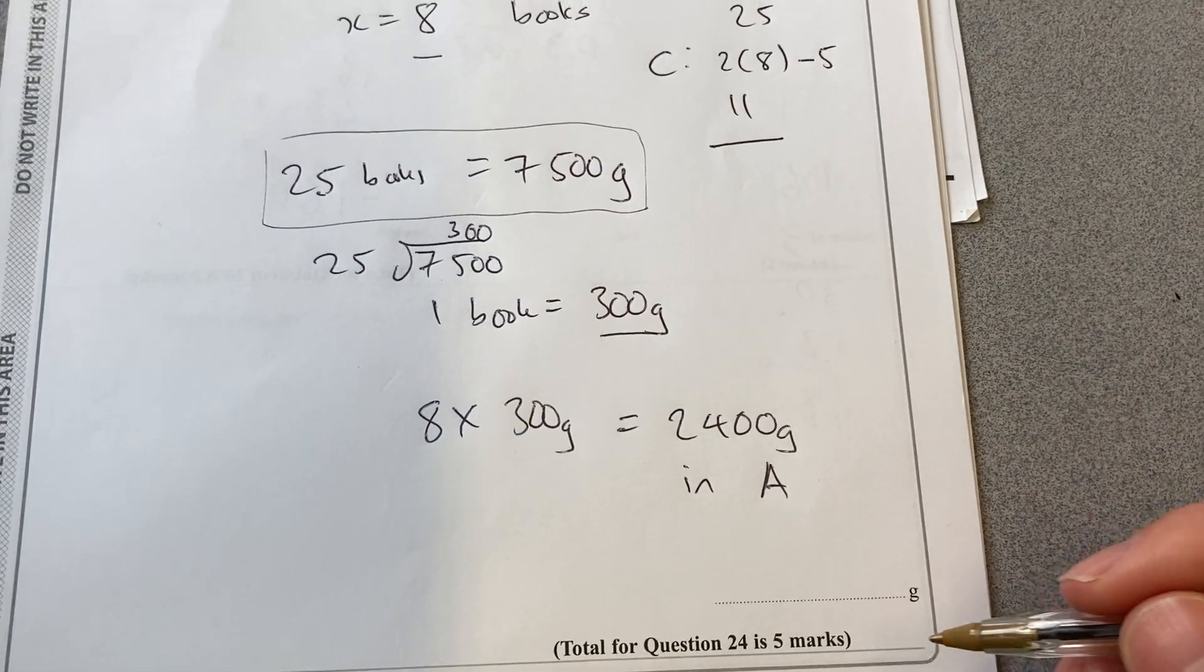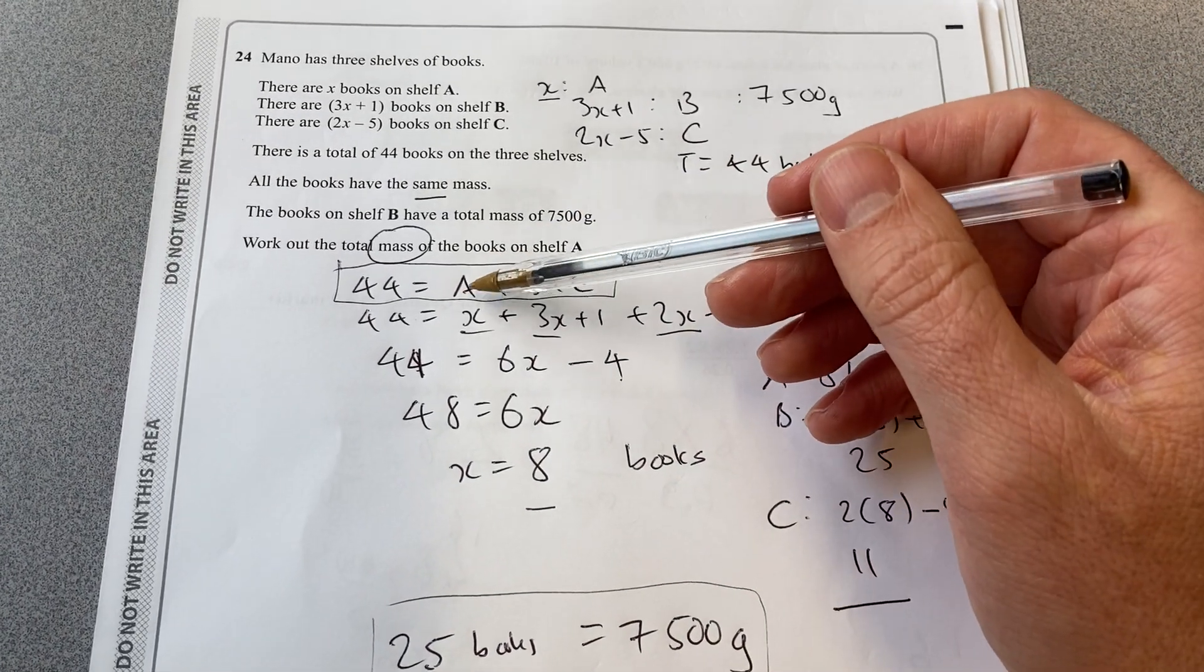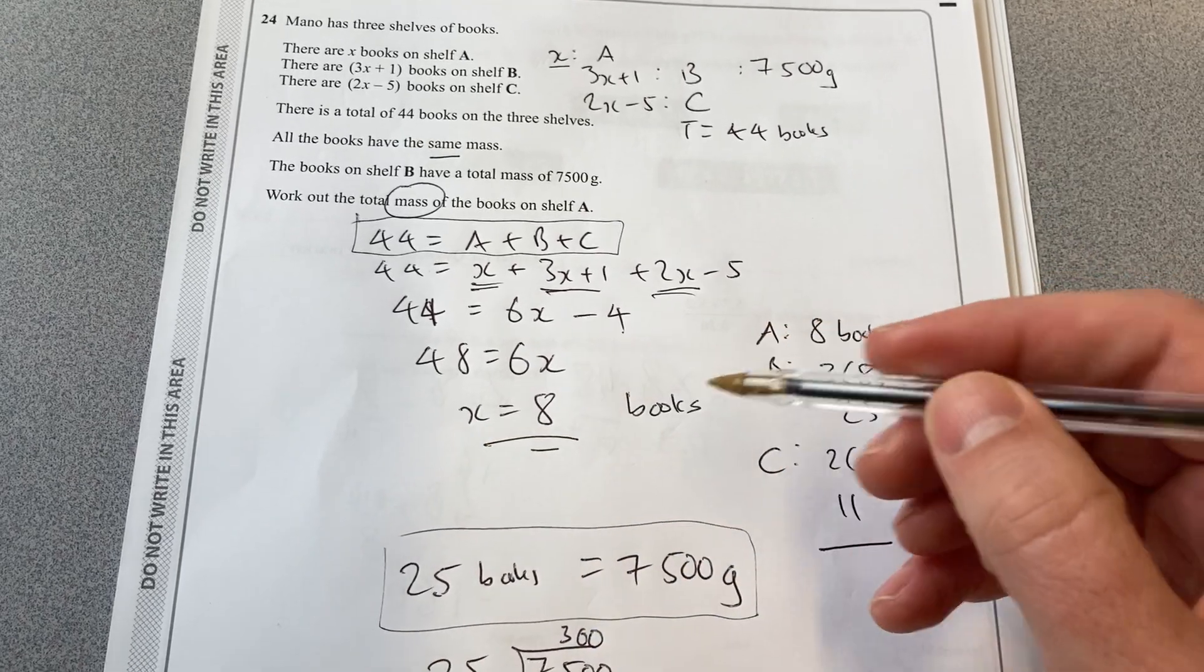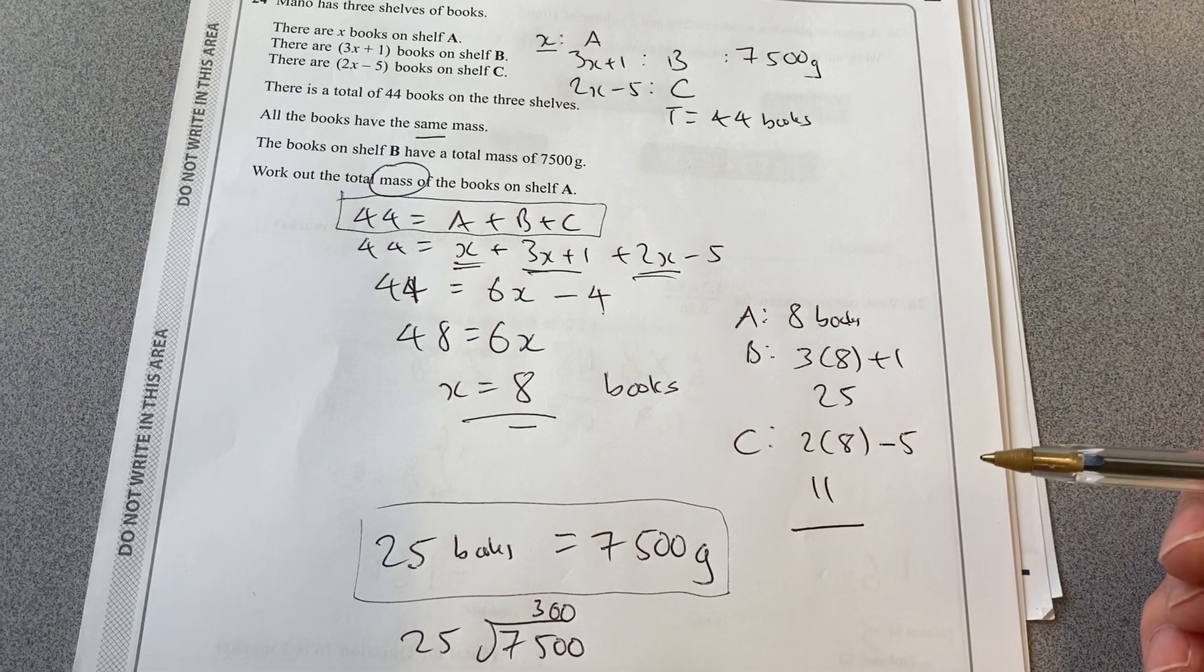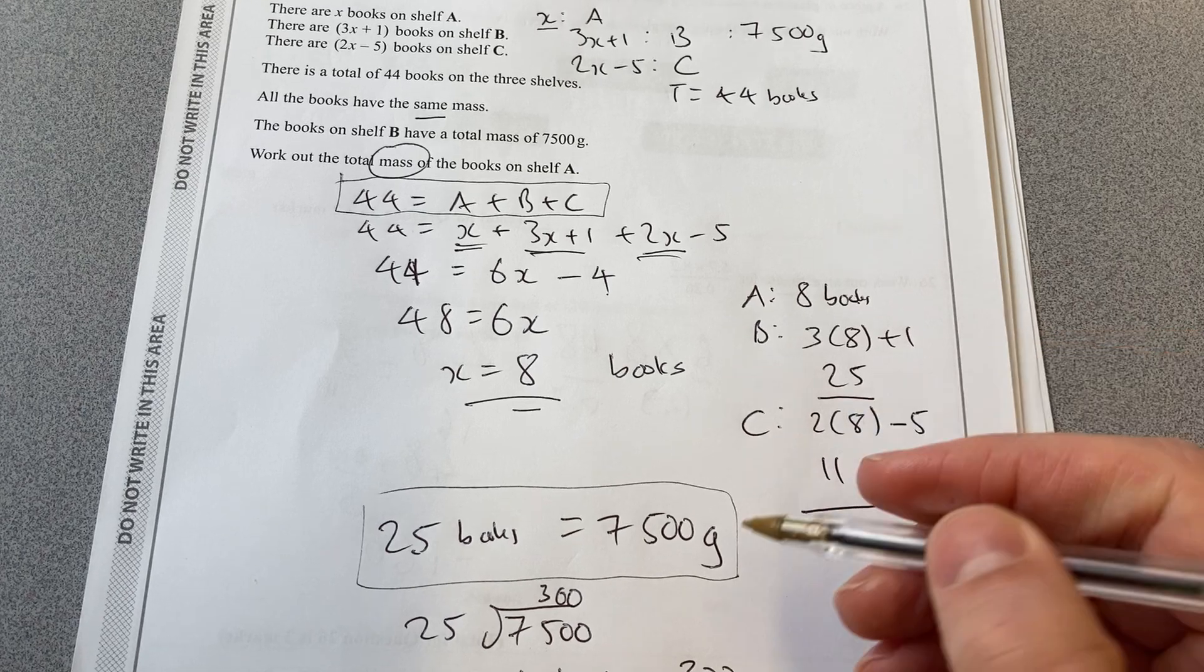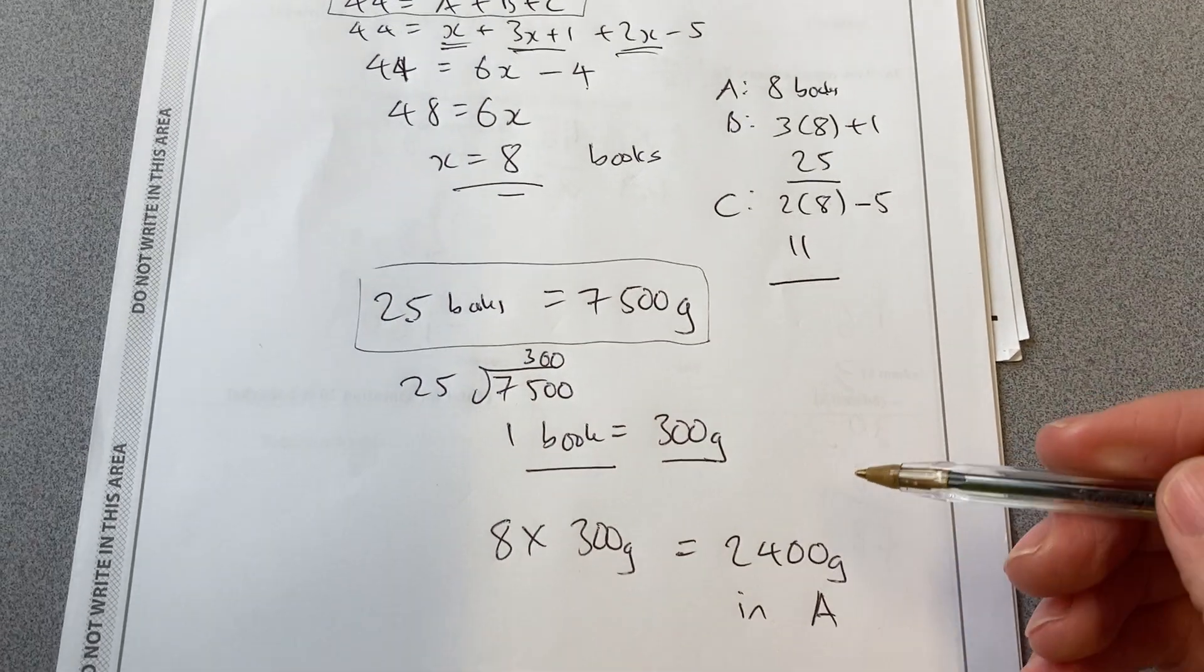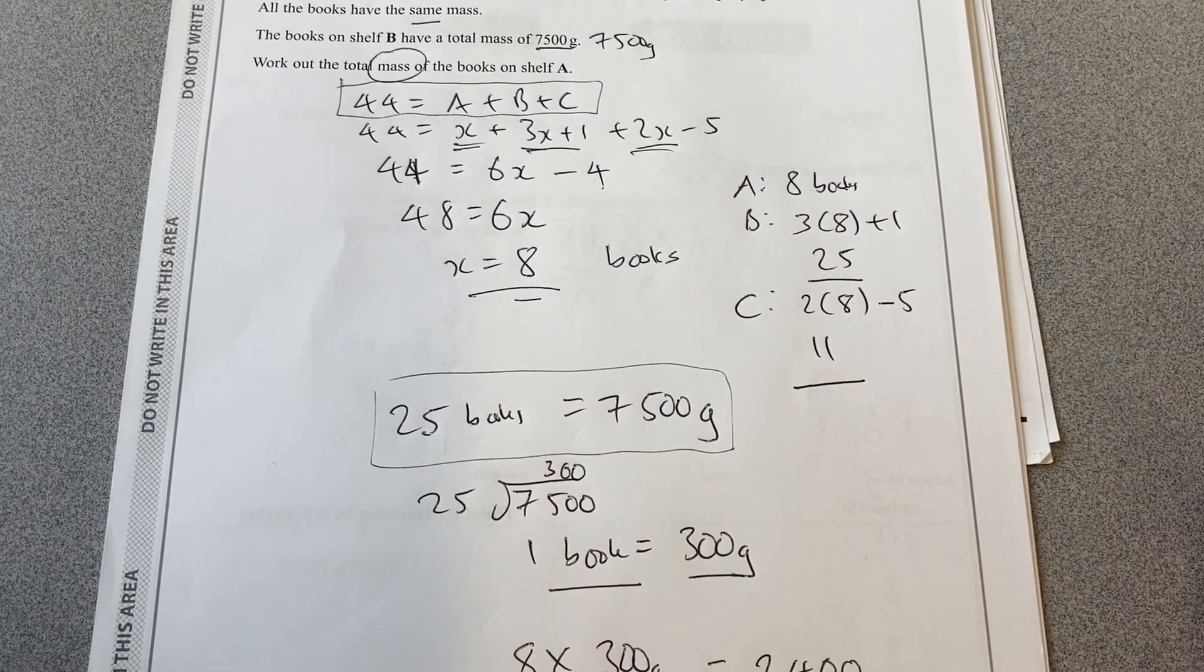It's a 5 mark question, so there's lots of steps you need to earn your marks. One for noticing that the total books is A plus B plus C. Then collecting those terms to make this equation and solving it to find the number of books. You don't have to find the books on each shelf, but I did just to check. You had to find out the books on B so you could connect that to the mass information they gave us. Then you find out the mass of one book, and finally multiply that up to work out the total mass of the books on shelf A.